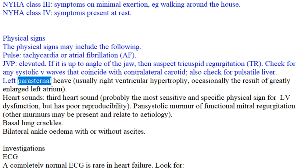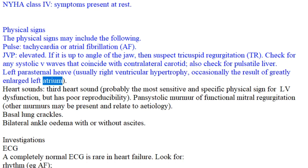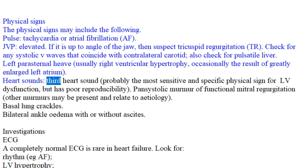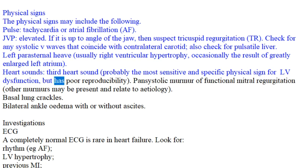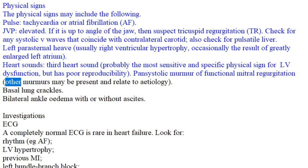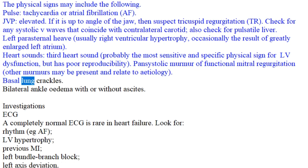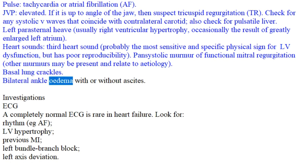Left parasternal heave usually indicates right ventricular hypertrophy, occasionally due to a greatly enlarged left atrium. Heart sounds: a third heart sound is probably the most sensitive and specific physical sign for LV dysfunction but has poor reproducibility. A pan-systolic murmur of functional mitral regurgitation may be present, along with basal lung crackles and bilateral ankle edema with or without ascites.